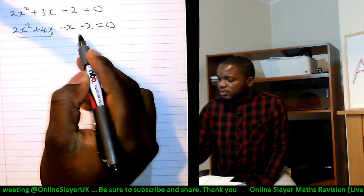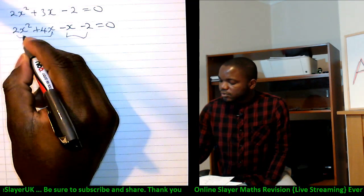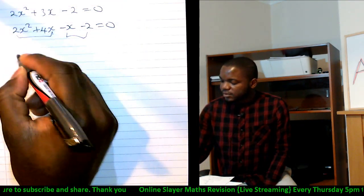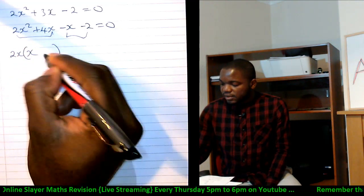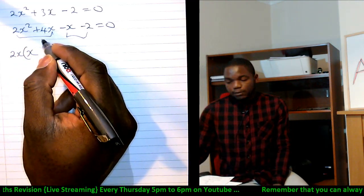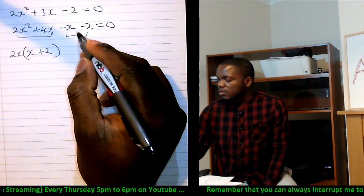What is common to these two? What's common to these two? 2 and x are common to these two. So you get 2x out of the bracket. When you take 2x out of 2x squared, you're left with x. When you take 2x out of 4x, you're left with plus 2.